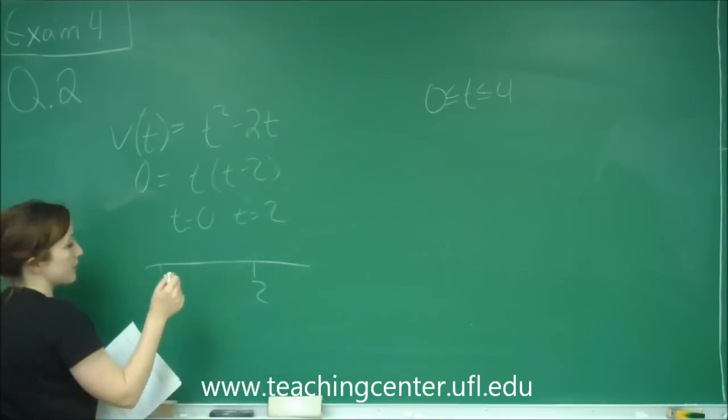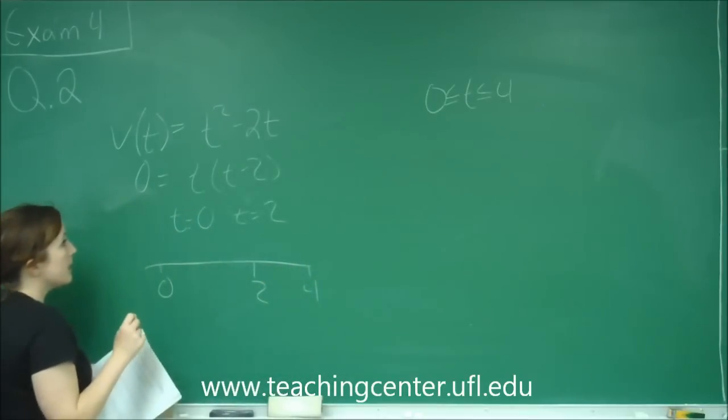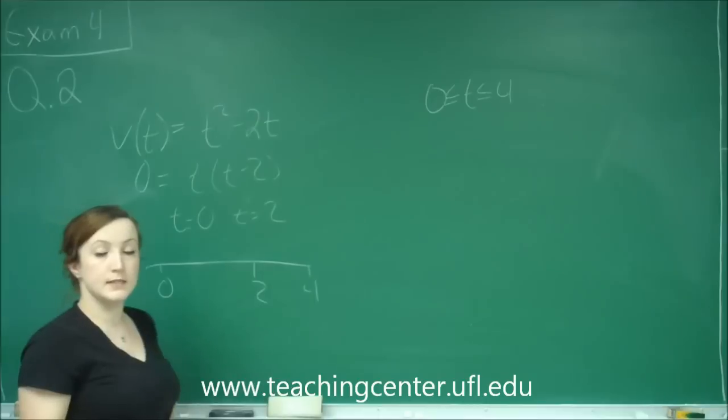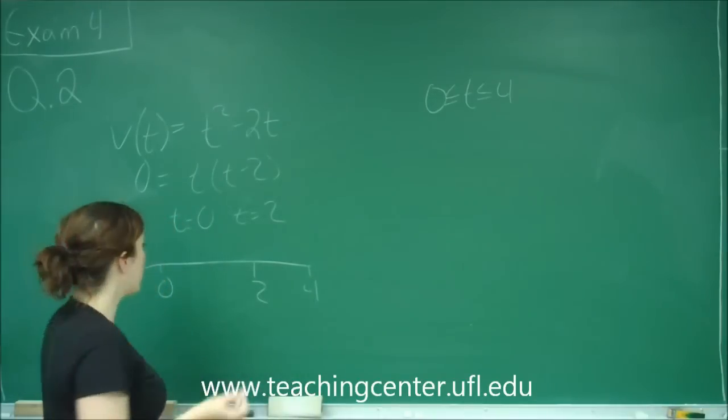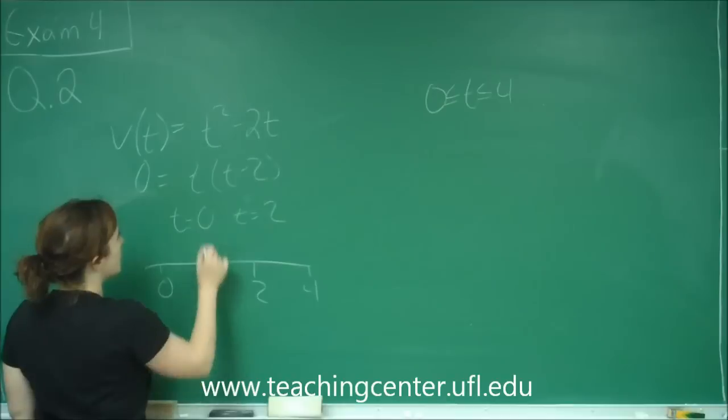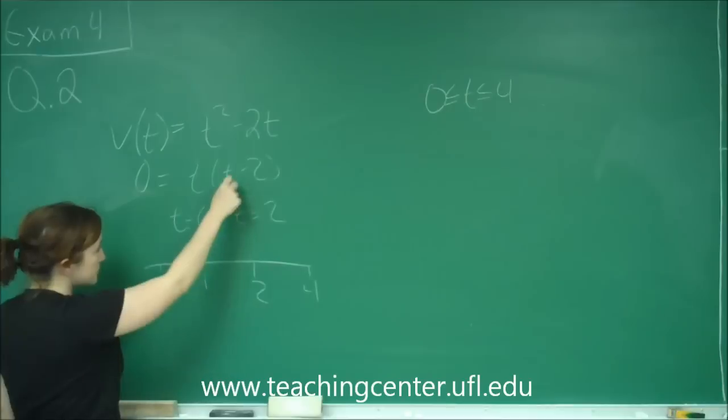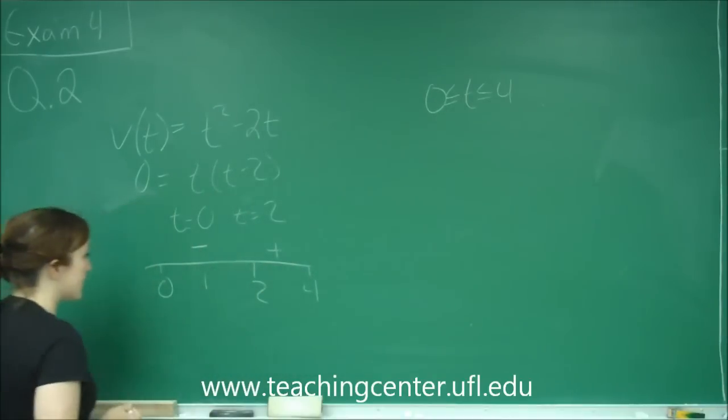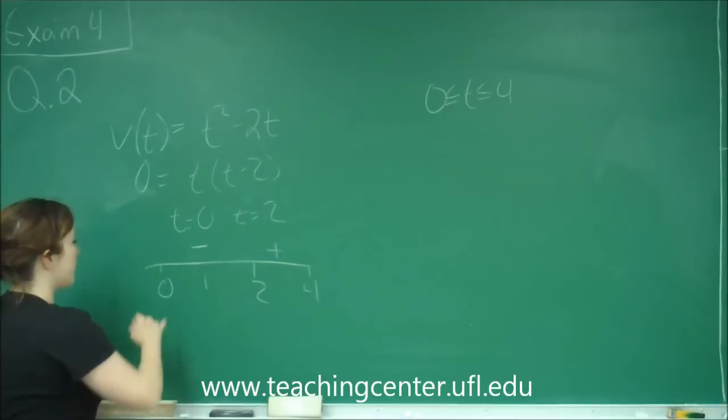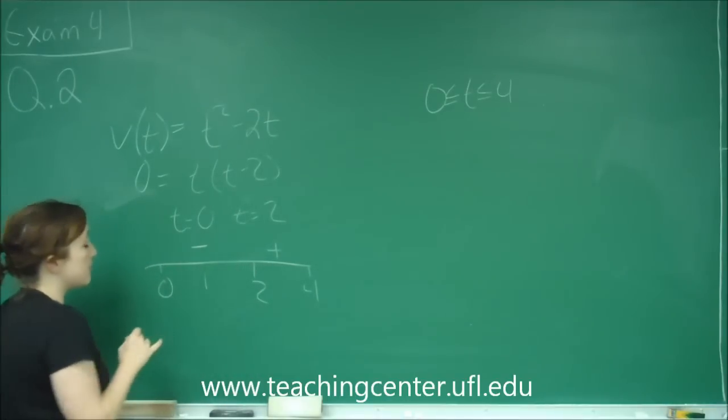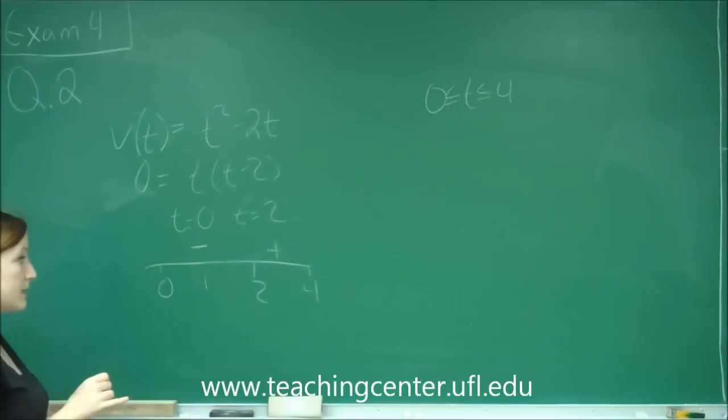I know that I'm going from 0 to 4, so I'm going to plug in 4 there. I can plug a number back into my velocity to see where it's positive and where it's negative. So I plug in 1. 1 here will give me 1 minus 2, which is negative. And then because of my multiplicity, this will switch to positive. So I know that from 0 to 2, my velocity will be negative, and from 2 to 4, my velocity is positive.